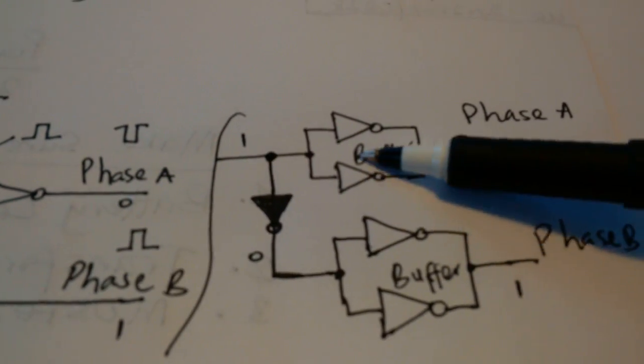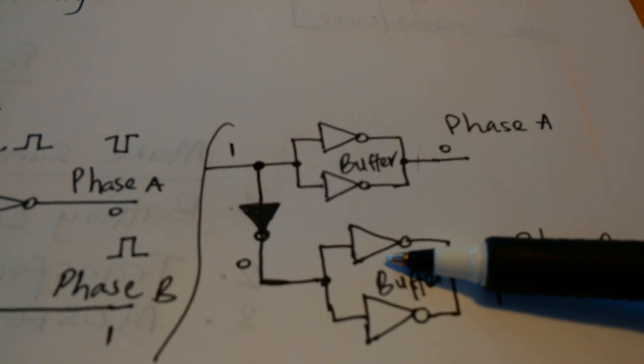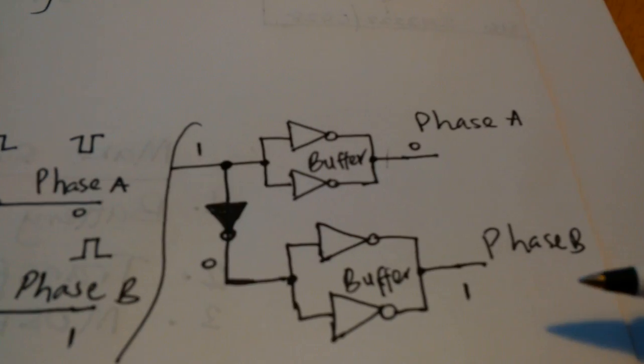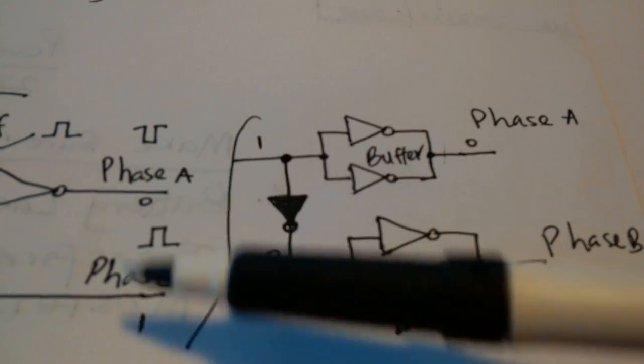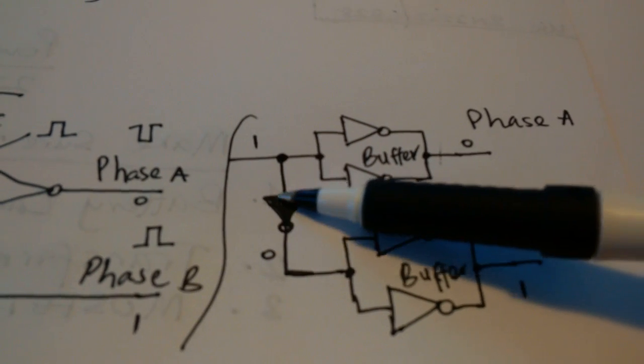Another way to configure this is to configure two inverters as a buffer, another two inverters as another buffer. This is phase A and phase B, similar to phase A and phase B over there.